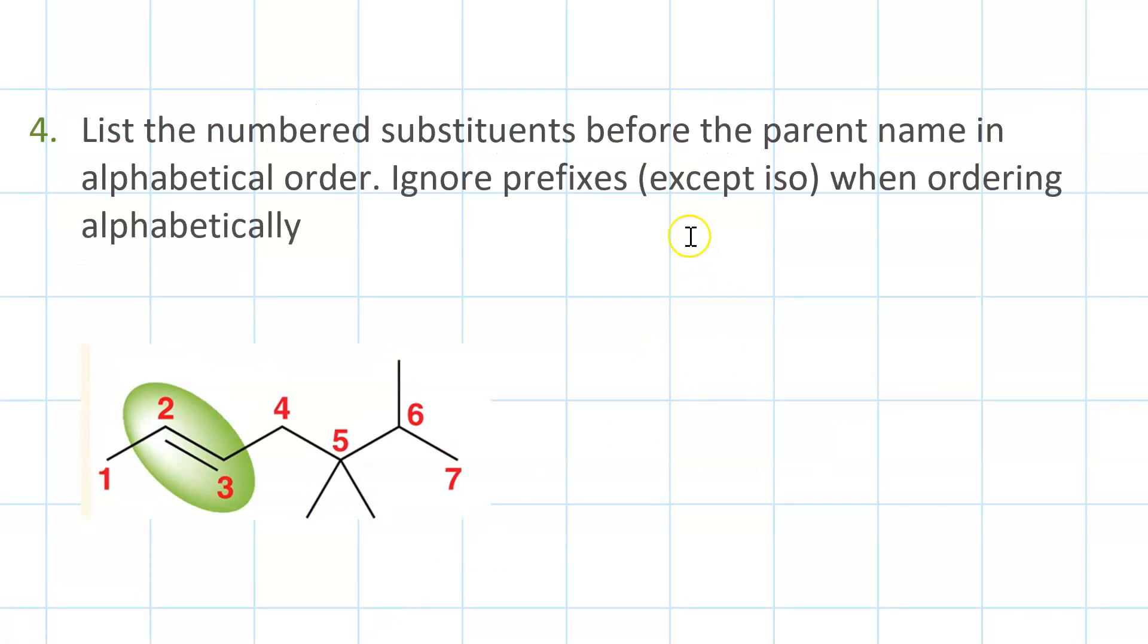So then we're going to list the numbered substituents before the parent name and ignore prefixes except for iso as far as the alphabet goes. We have a methyl group here and a methyl group and a methyl group here. So it's going to be 5,5,6-trimethyl, and then whatever the parent name is.